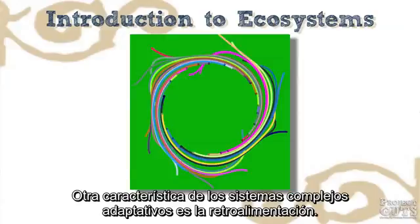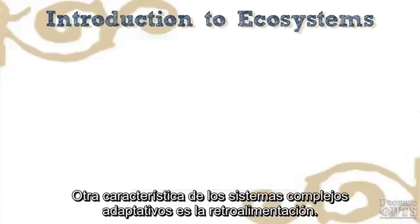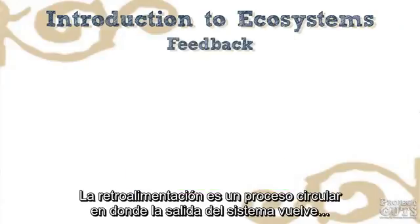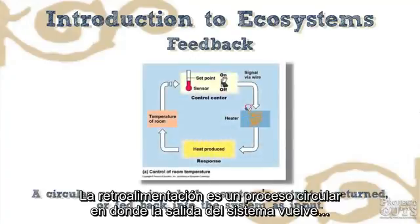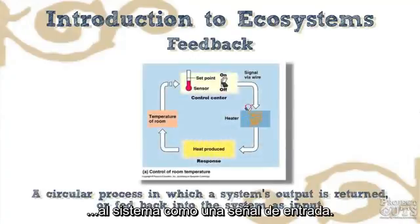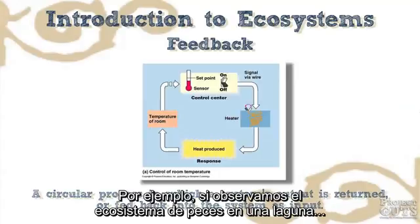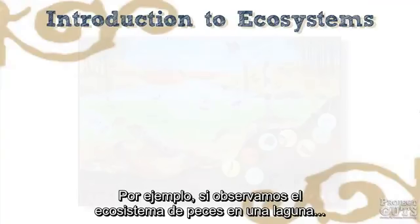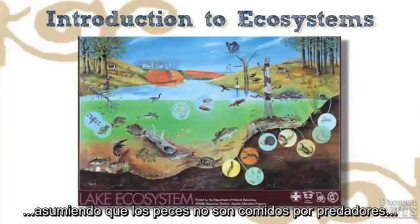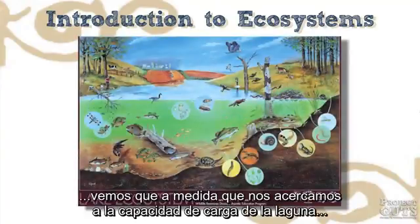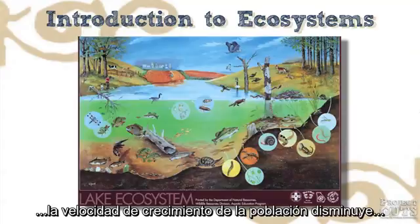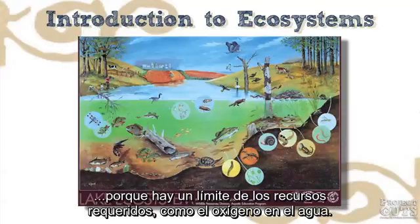Another characteristic of most complex systems is feedback. Feedback is a circular process in which a system's output is returned, or fed back, into the system as input. For example, if we look at the ecosystem of fish in a pond, assuming the fish are not being consumed by predators, we see that as the population approaches the carrying capacity of the pond, the rate of population growth decreases because of limits in required resources.